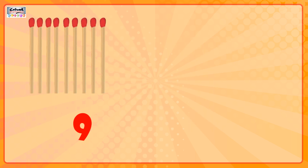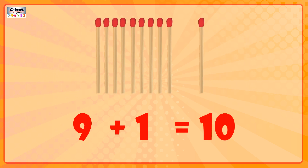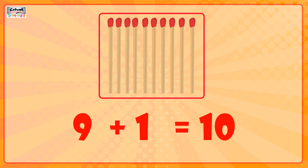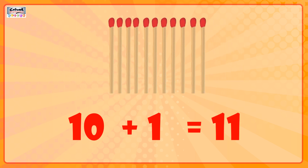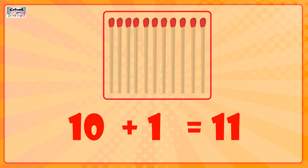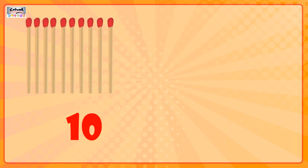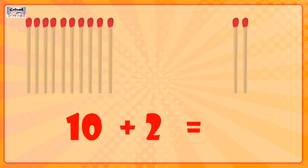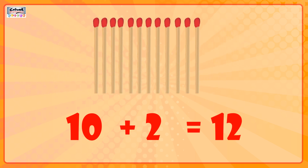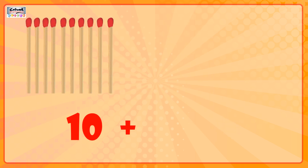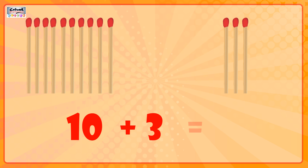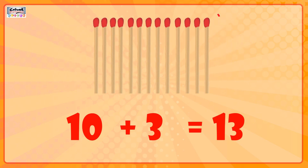9 matchsticks plus 1 matchstick is equal to 10 matchsticks. 10 matchsticks plus 1 matchstick is equal to 11 matchsticks. 10 matchsticks plus 2 matchsticks is equal to 12 matchsticks. 10 matchsticks plus 3 matchsticks is equal to 13 matchsticks.